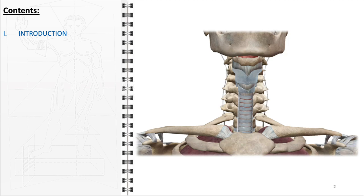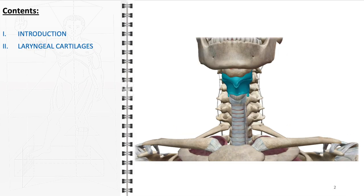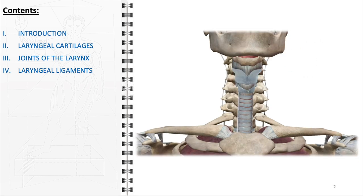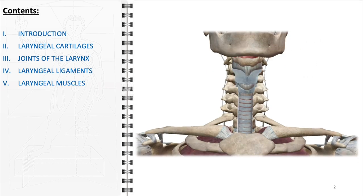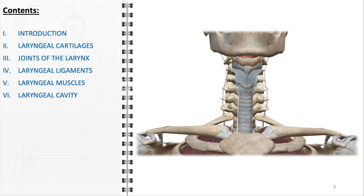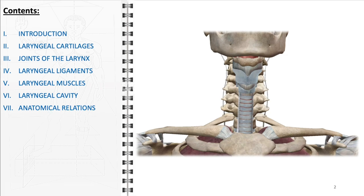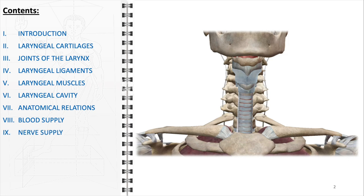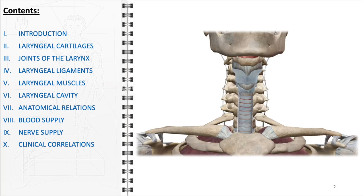Following this, we will delve into descriptions of its various components, including the laryngeal cartilages, joints, ligaments, and muscles, each playing a unique role in laryngeal function. We will then dive deeper into the anatomy of the laryngeal cavity, examining its internal structure and features. Next, we will discuss the larynx's anatomical relations, shedding light on its position and interaction with surrounding structures in the neck. This will be followed by an exploration of its blood and nerve supply. We will then focus on the larynx's primary functions, along with a discussion of some key clinical correlations. Our discussion will culminate in a conclusion, summarizing the key takeaways and emphasizing the importance of the larynx in both health and disease.